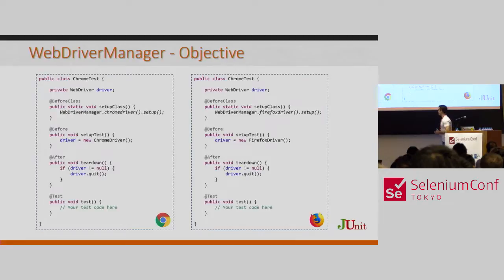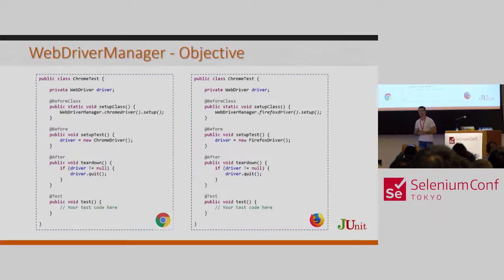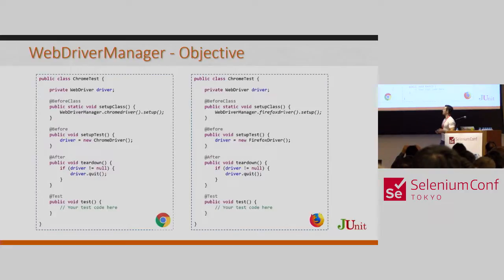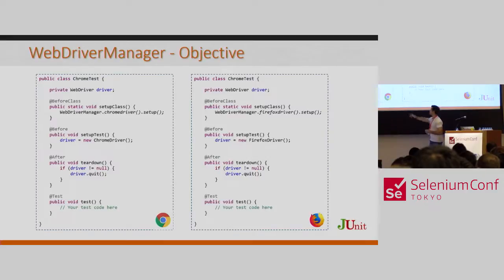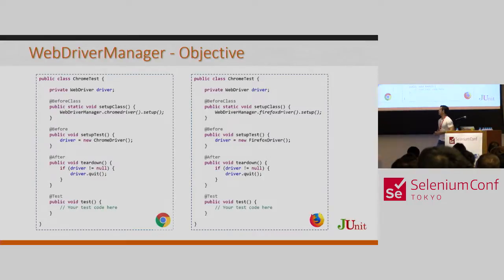Here is an example of how to use it in JUnit 4. In JUnit 4 we have methods executed before the tests — specifically, the @BeforeClass method. There we call WebDriverManager to download the proper driver to use, in this case Chrome. This happens before all tests in the class. Then, in the @Before method, we create the ChromeDriver object before each single test.